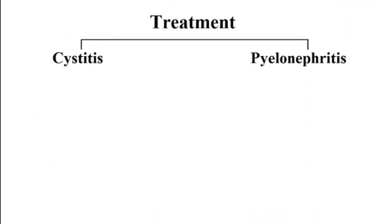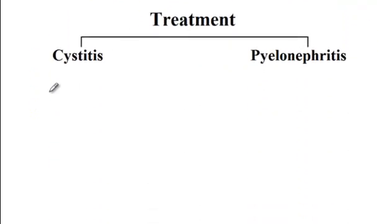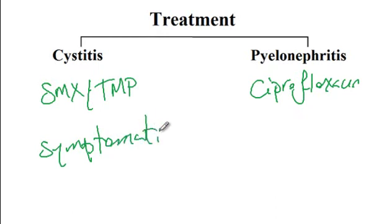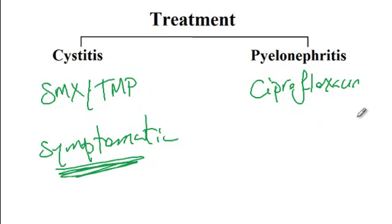For treatment, patients with cystitis can be treated with sulfamethoxazole-trimethoprim, and those with pyelonephritis can be treated with ciprofloxacin. You should only treat a urinary tract infection if the patient is symptomatic. If on urinalysis you see signs of UTI but the patient denies any symptoms such as burning on urination, frequency, or dysuria, then you do not need to treat. But if they are symptomatic, you can start the medications listed.